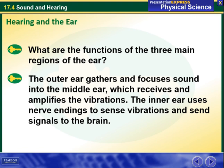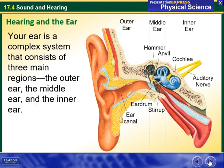So what are the functions of the three main regions of the ear? The outer ear gathers and focuses sound into the middle ear, which receives and amplifies the vibration. The inner ear uses nerve endings to sense vibrations and send signals to the brain. So we have the outer ear, the middle ear, and the inner ear.